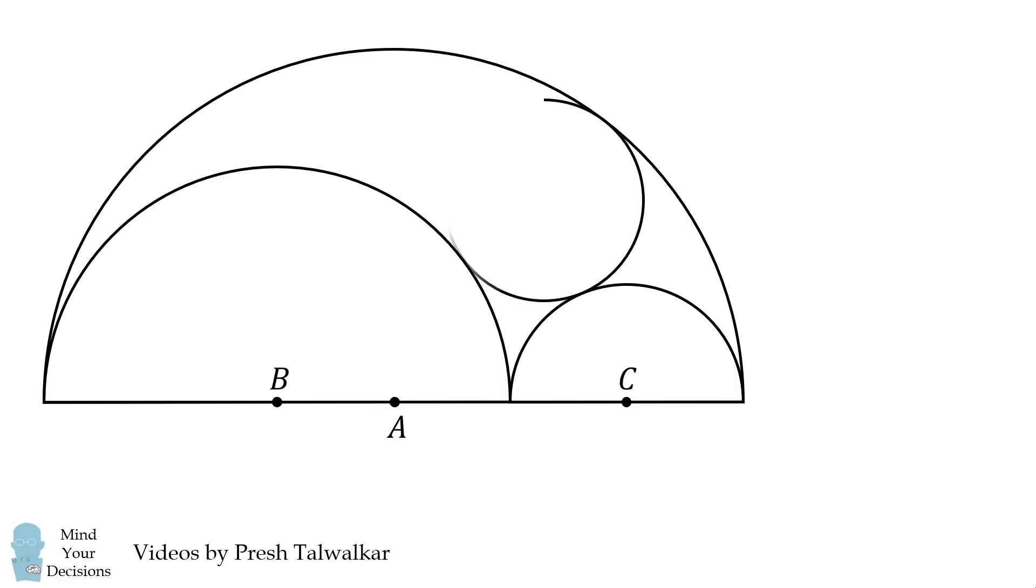Then construct circle D, which is internally tangent to semicircle A and externally tangent to semicircles B and C. If the radius of semicircle B is equal to 2 and the radius of semicircle C is equal to 1, solve for the radius of circle D.